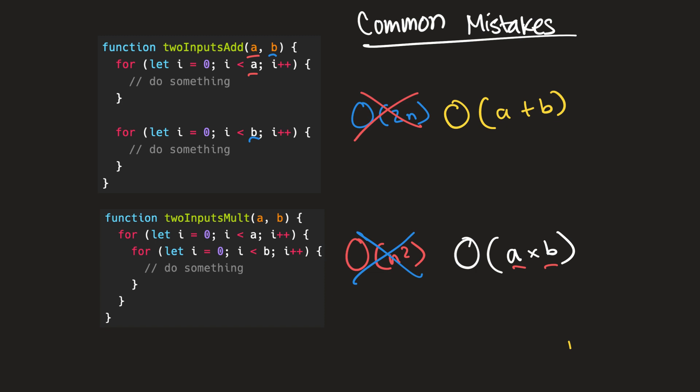So that is space complexity and some common mistakes that people make with big O notation. I hope that makes sense.